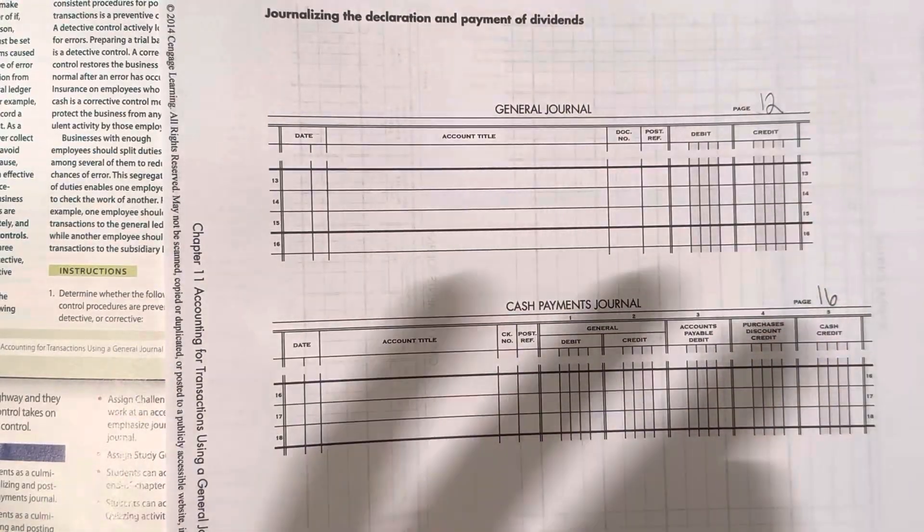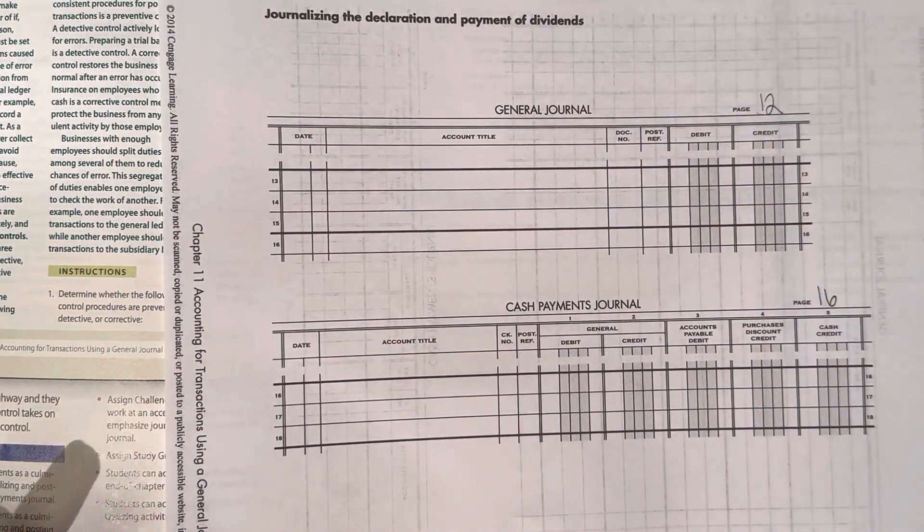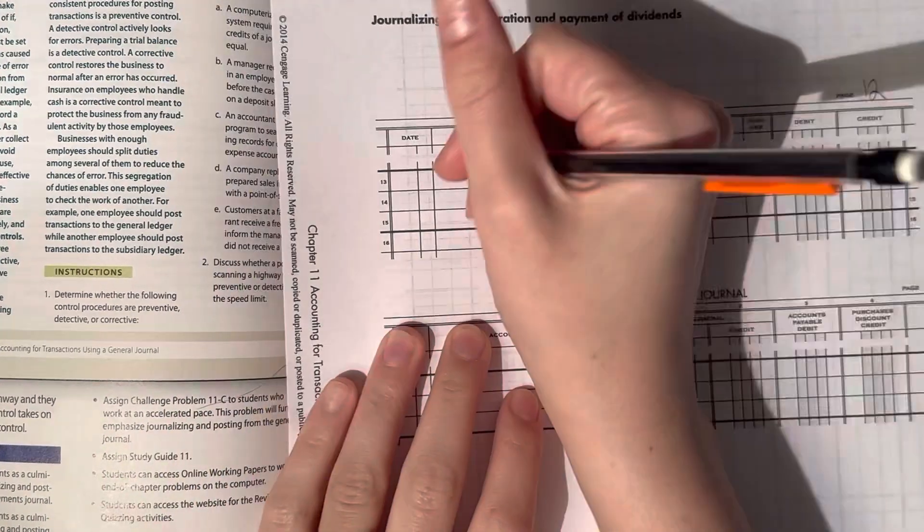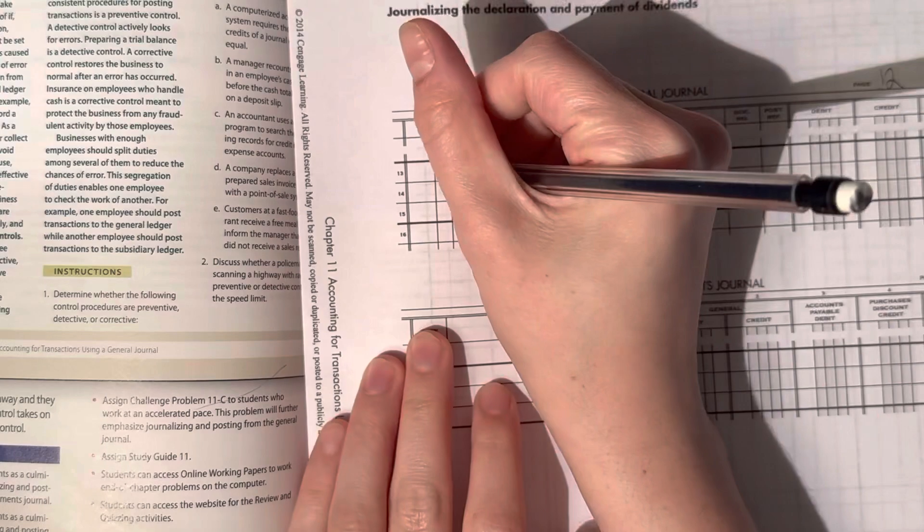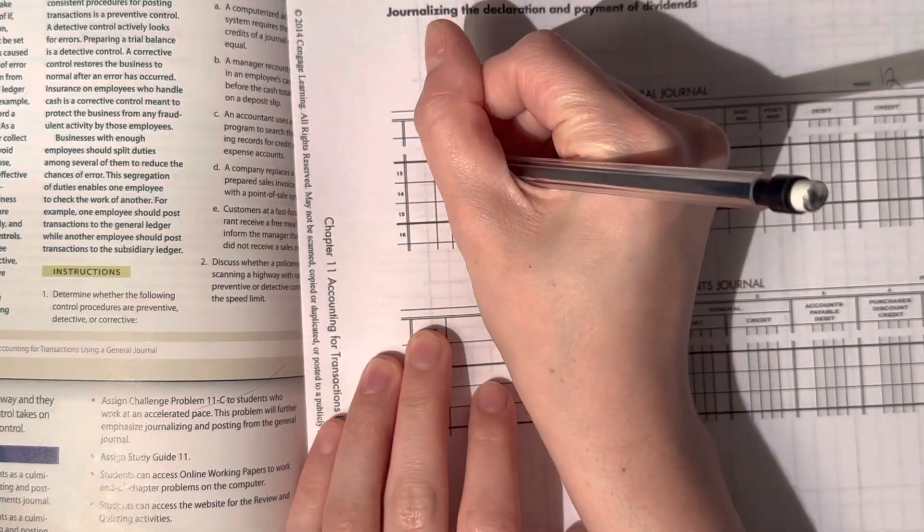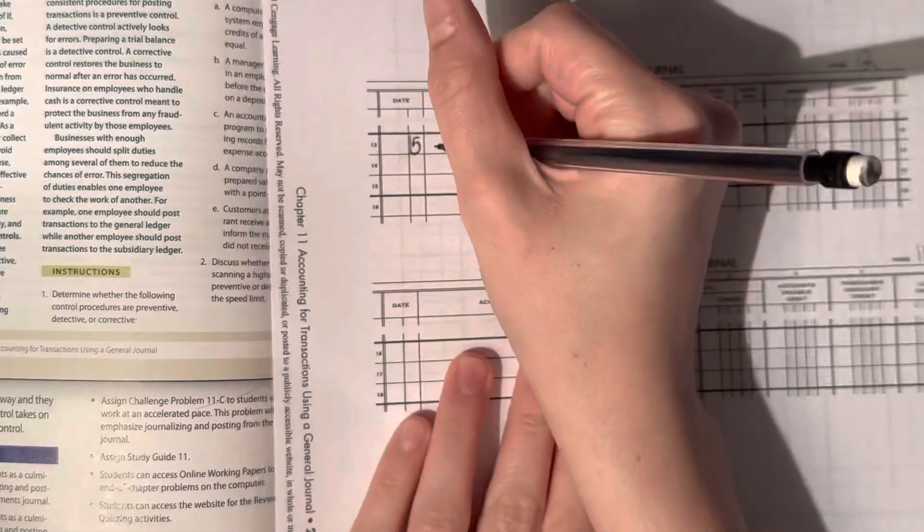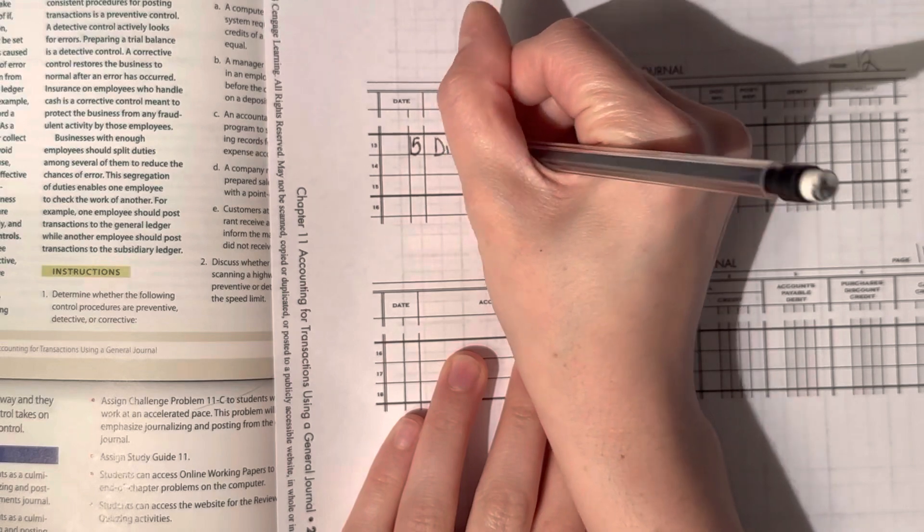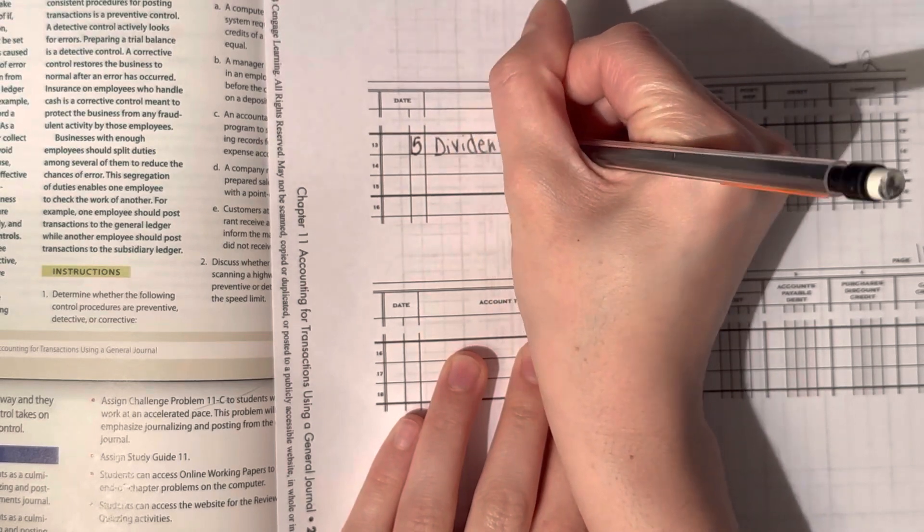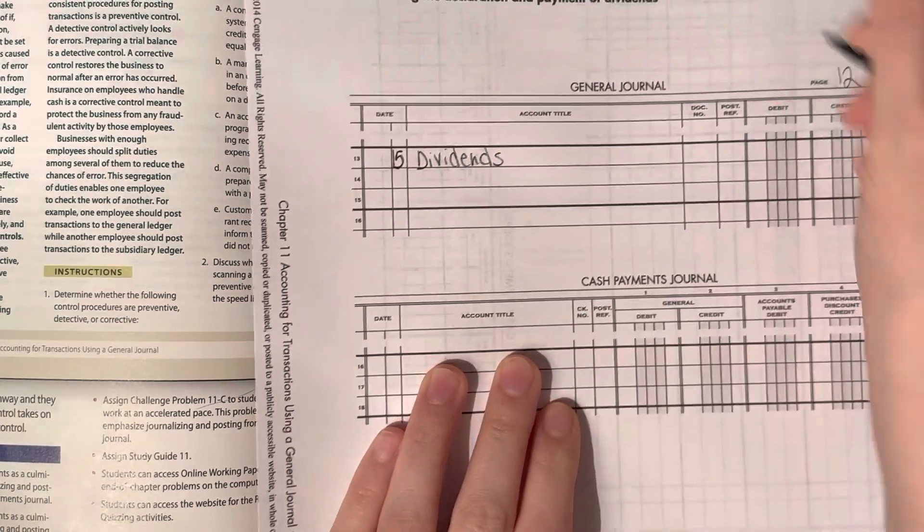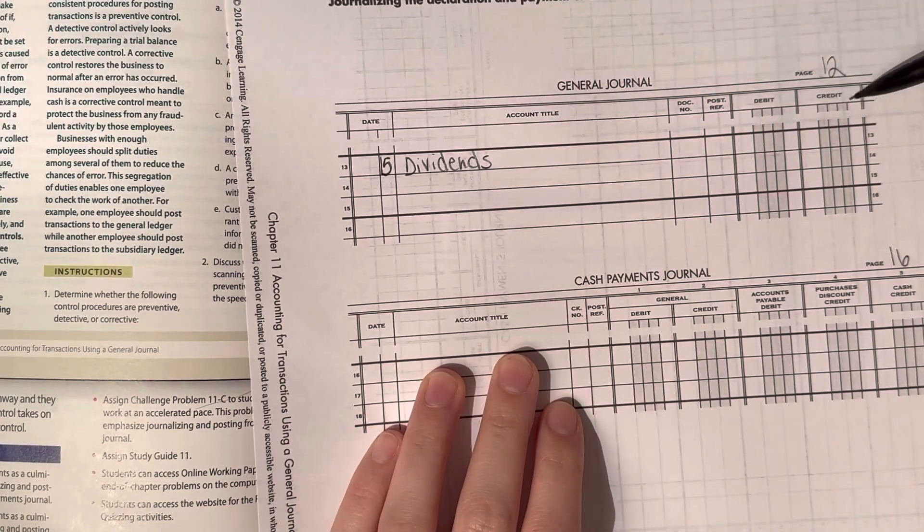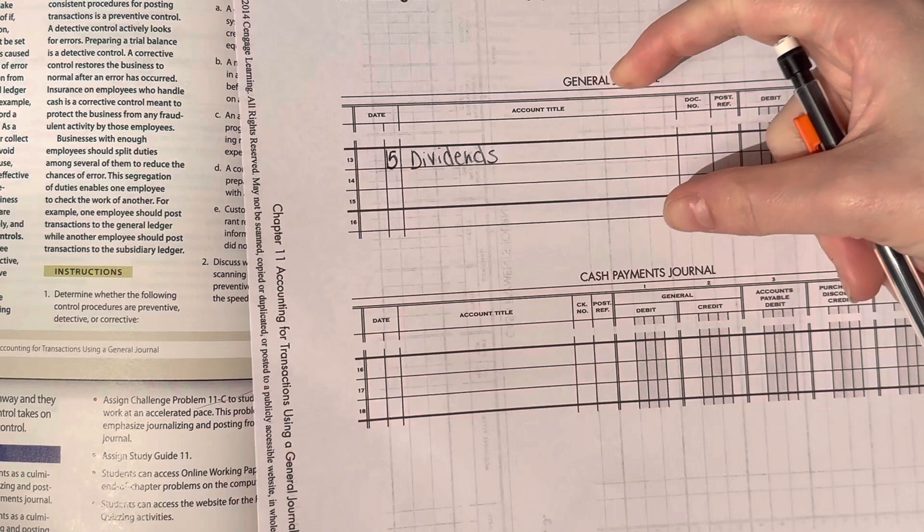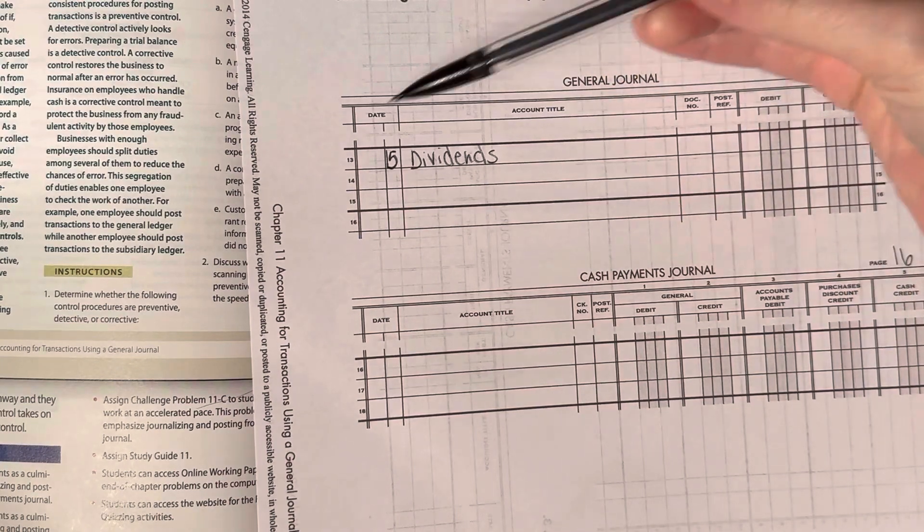If you do that math, you should get $28,800. So I'll write the date first. It was the 15th. And it's the new account called dividends because we declared dividends.